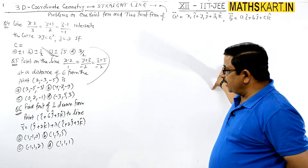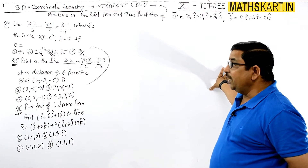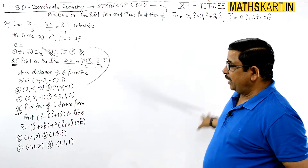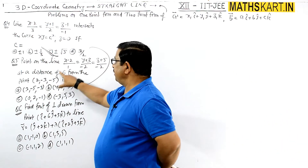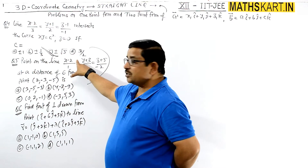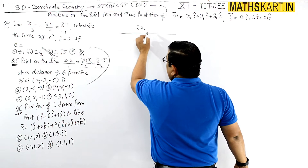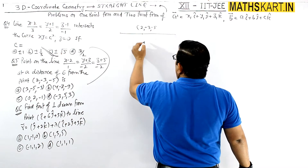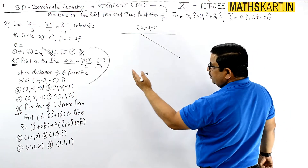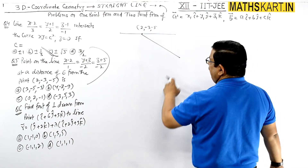Question 5: one point is there on this line. The line is given as x minus 2 by 1, y plus 3 by minus 2, z plus 5 by minus 2, at a distance of 6 from the point (2, -3, -5). Now this point (2, -3, -5) is lying on this line. So this given point lies on the line, and we need to find another point on the line at a distance of 6 from this point.